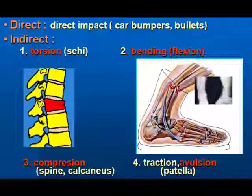Indirect mechanisms include bending (which is flexion), traction, avulsion, and compression of the spine or calcaneus bone. Fragment displacements can be in the form of angulation, rotation, overlapping, and translation, due to trauma, muscle contraction, or gravitation.